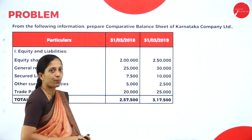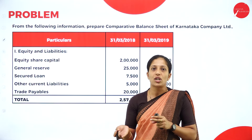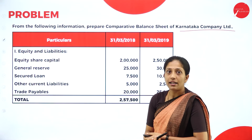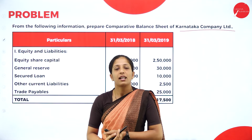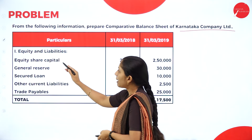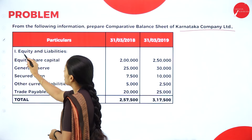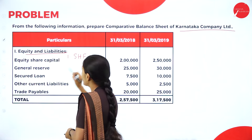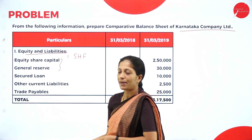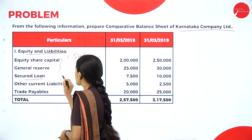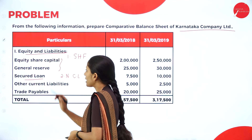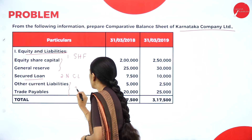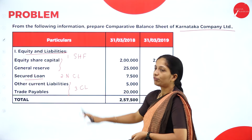In the same way, let us solve the next problem. Once you do one problem properly, you can easily understand all others. From the following information, prepare comparative balance sheet of Karnataka Company Limited. Remember, this is a 10-mark problem. They have given equity and liabilities. Under equity and liabilities: shareholders fund (share capital, general reserve — which is reserves and surplus). Next, secured loan comes under non-current liability. Trade payables and other current liabilities come under current liabilities.